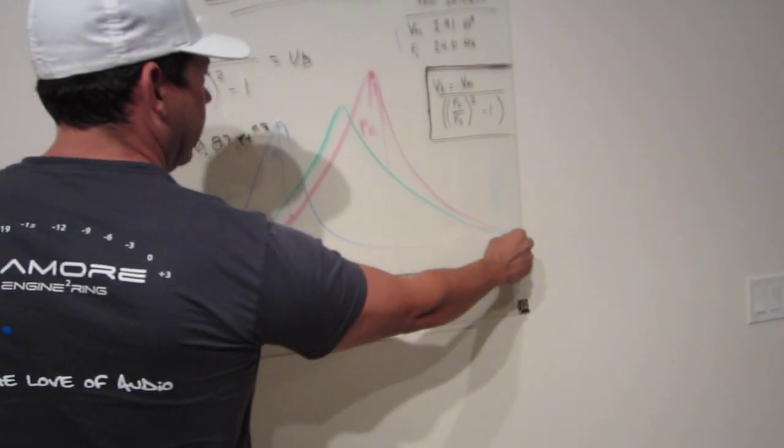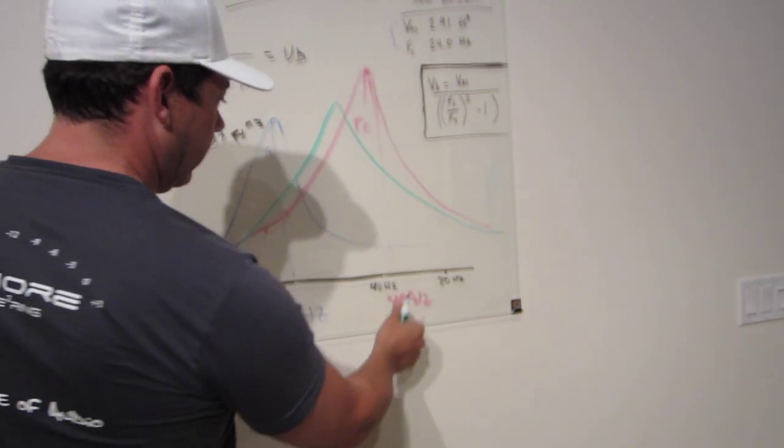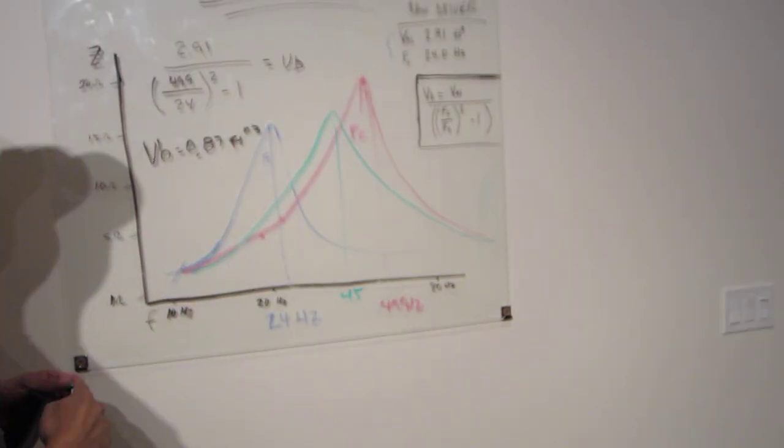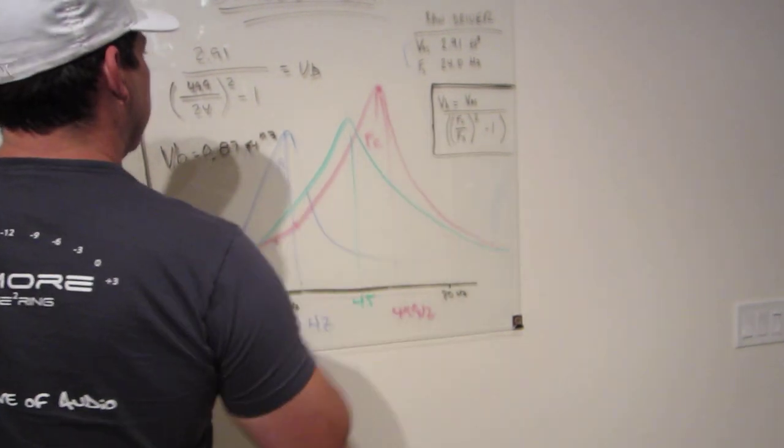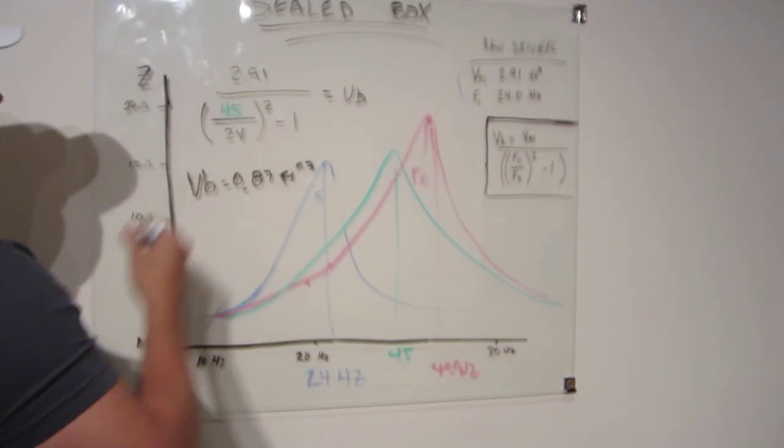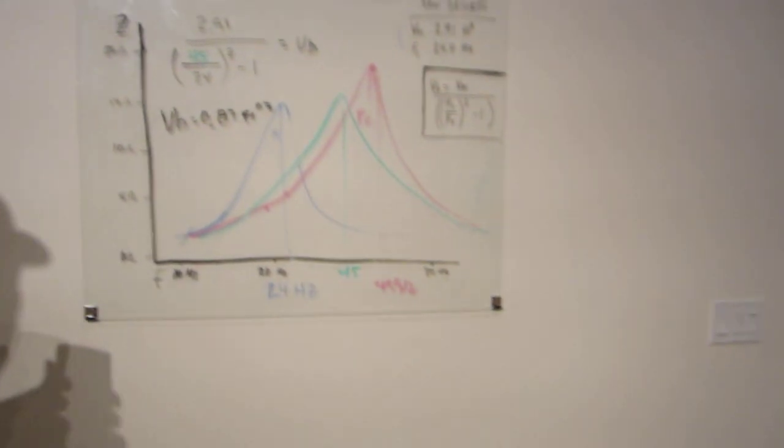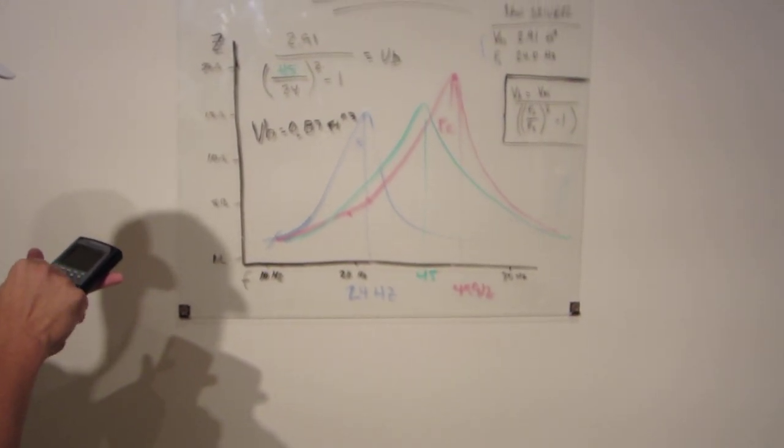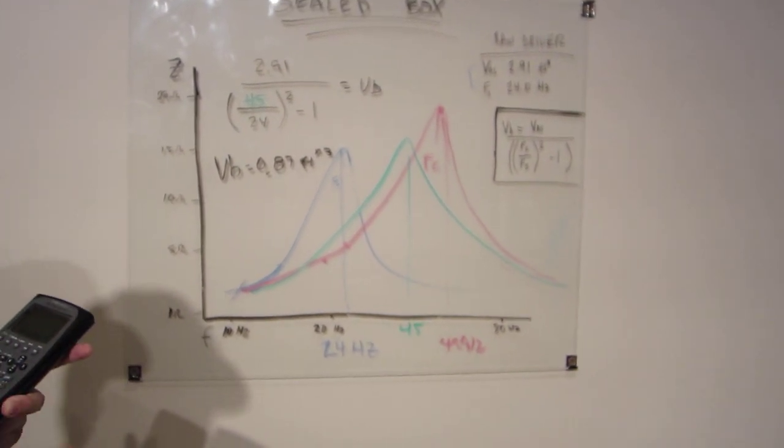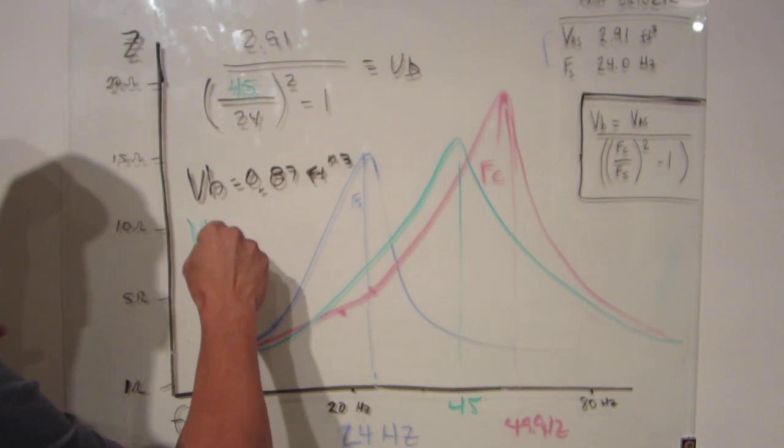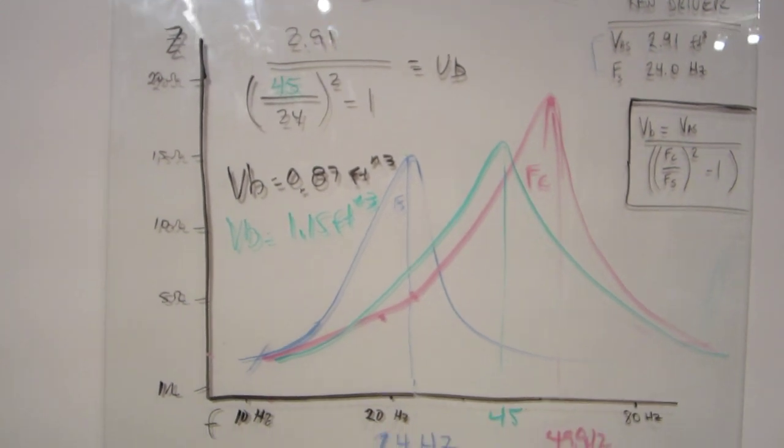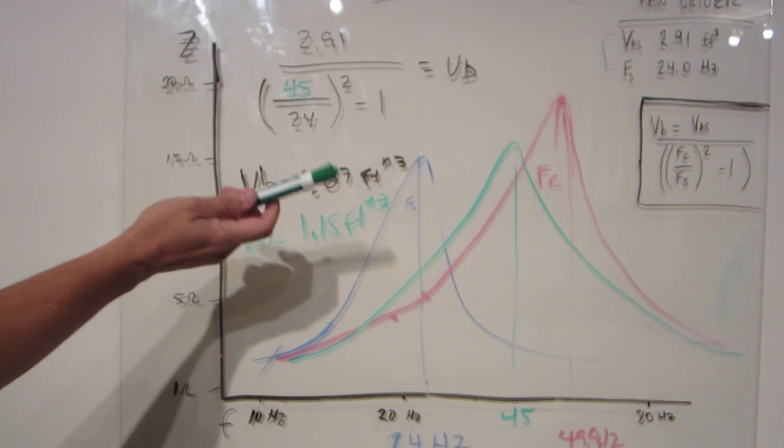So, this new impedance curve with the stuffing now looks like this, where this is 45 hertz. And the impedance, the max impedance is a little bit lower which is interesting. So, anyways, now our FC is 45 with the stuffing. So, if we re-run this with the stuffing in the box, how big does our box appear to be to the woofer? Let's just see. There it is. So, that stuffing that's in there made the box size apparent, box size to the woofer go from this to this.